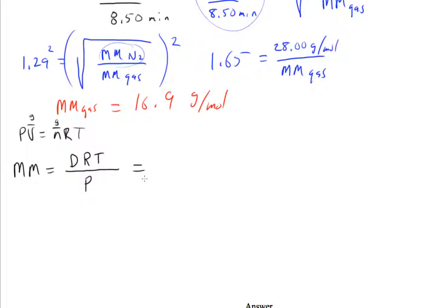So now I'm going to solve for density. Density then equals molar mass times pressure over R times T, and we are at STP, so that's real nice. We don't need to know the volume in order to find the density in this case. So density equals 16.9 grams per mole.